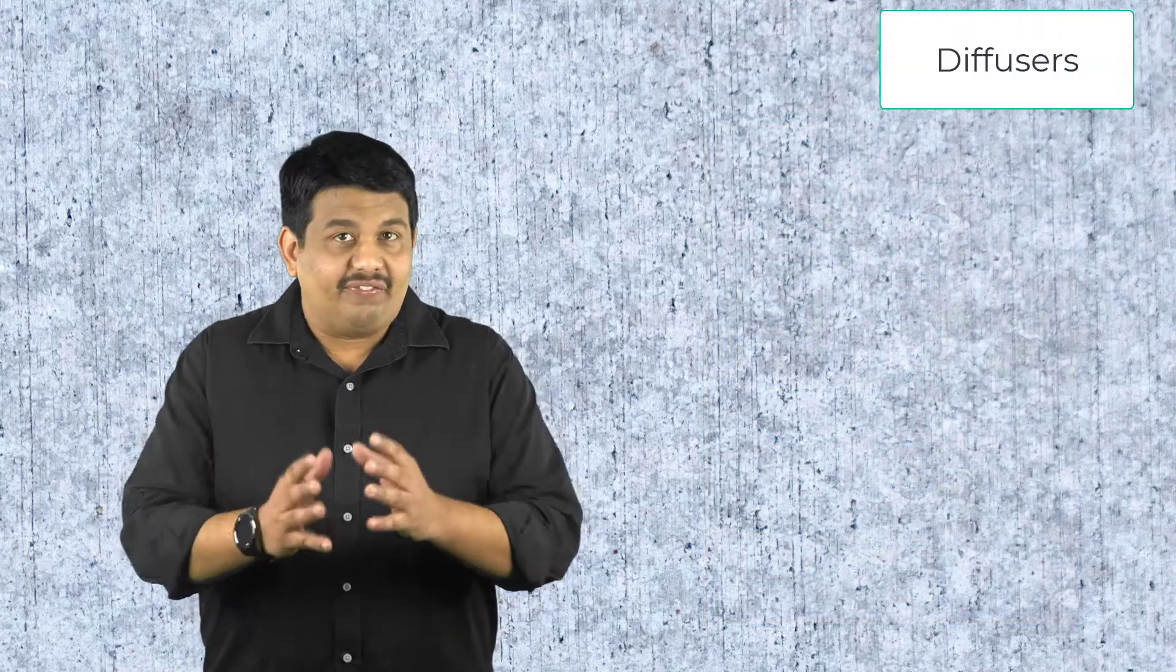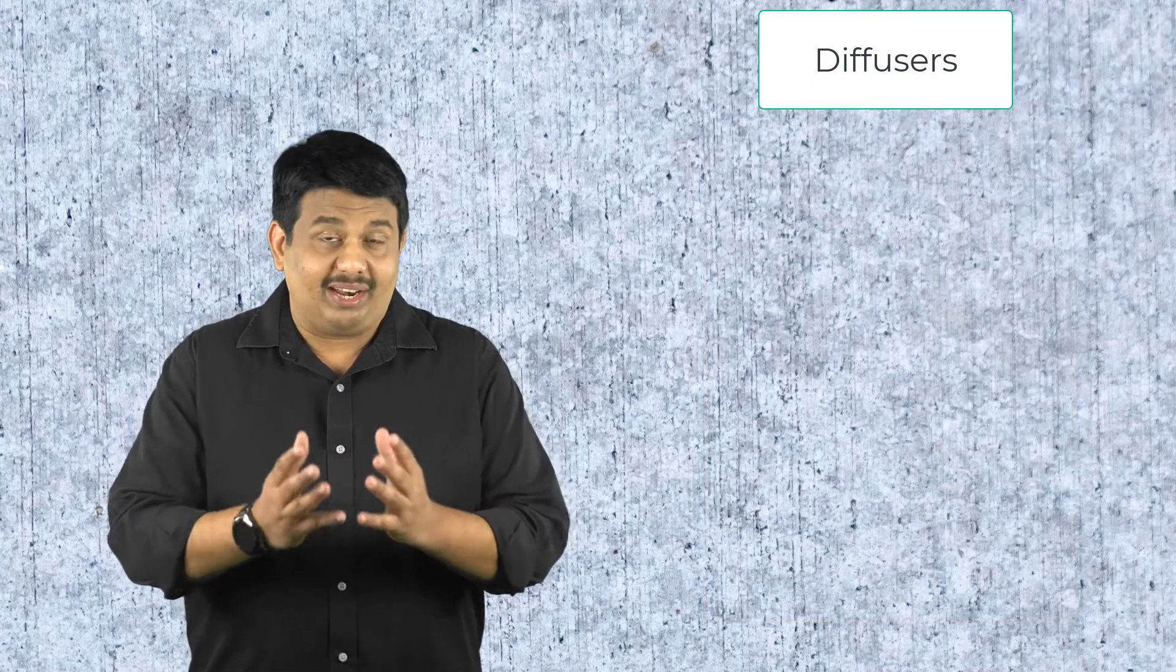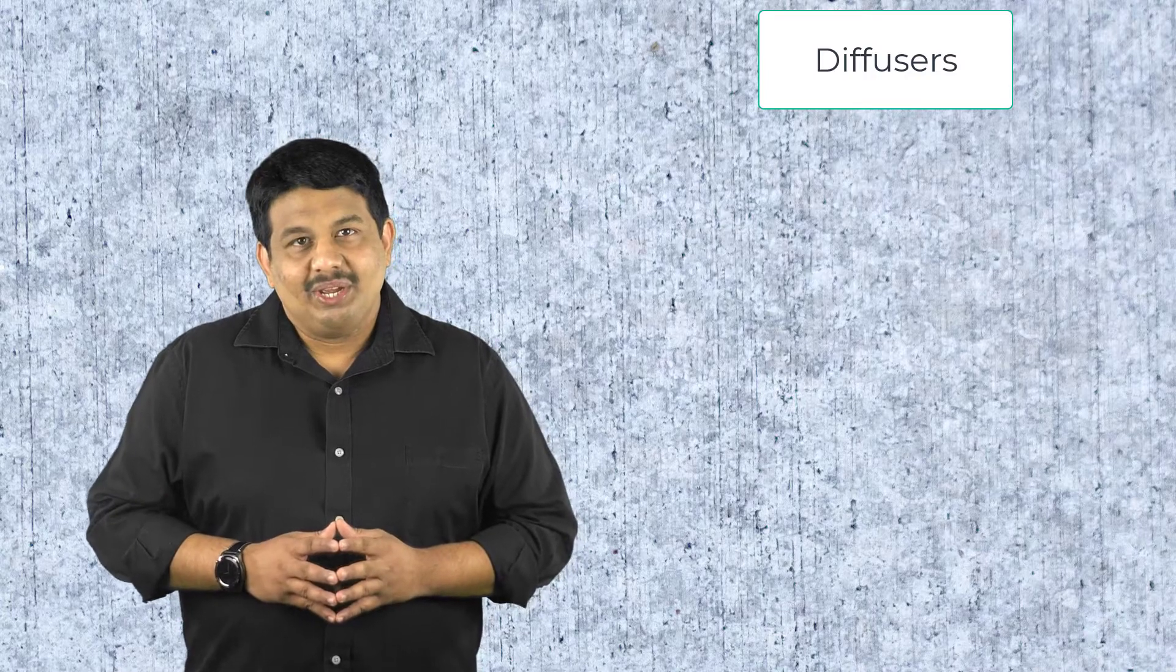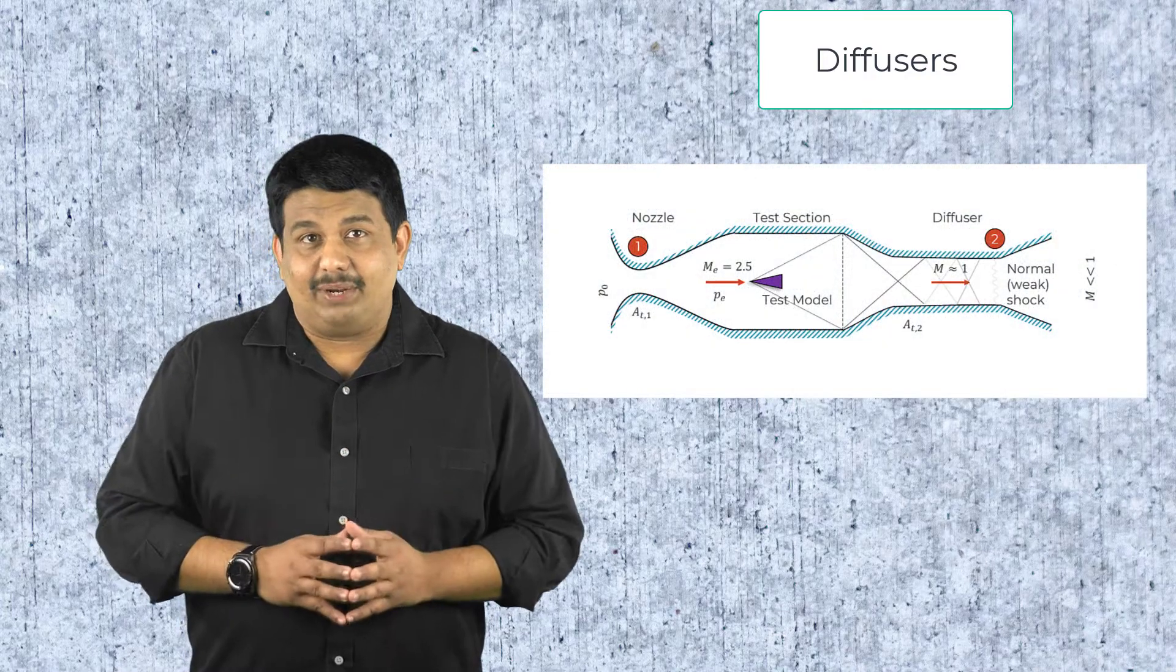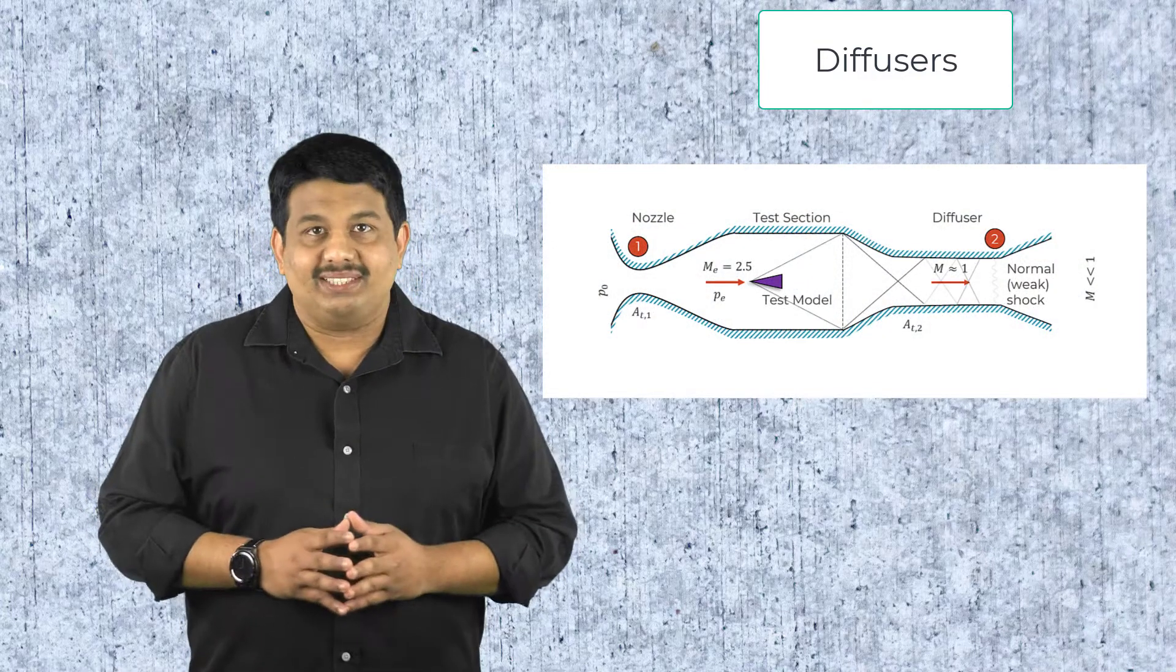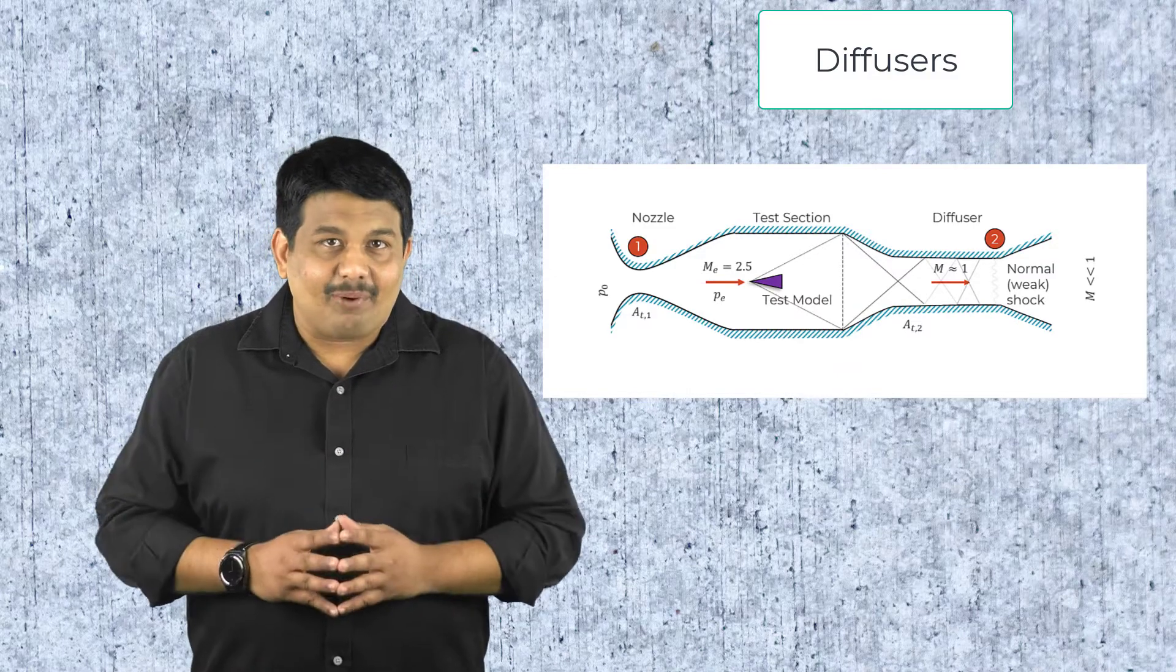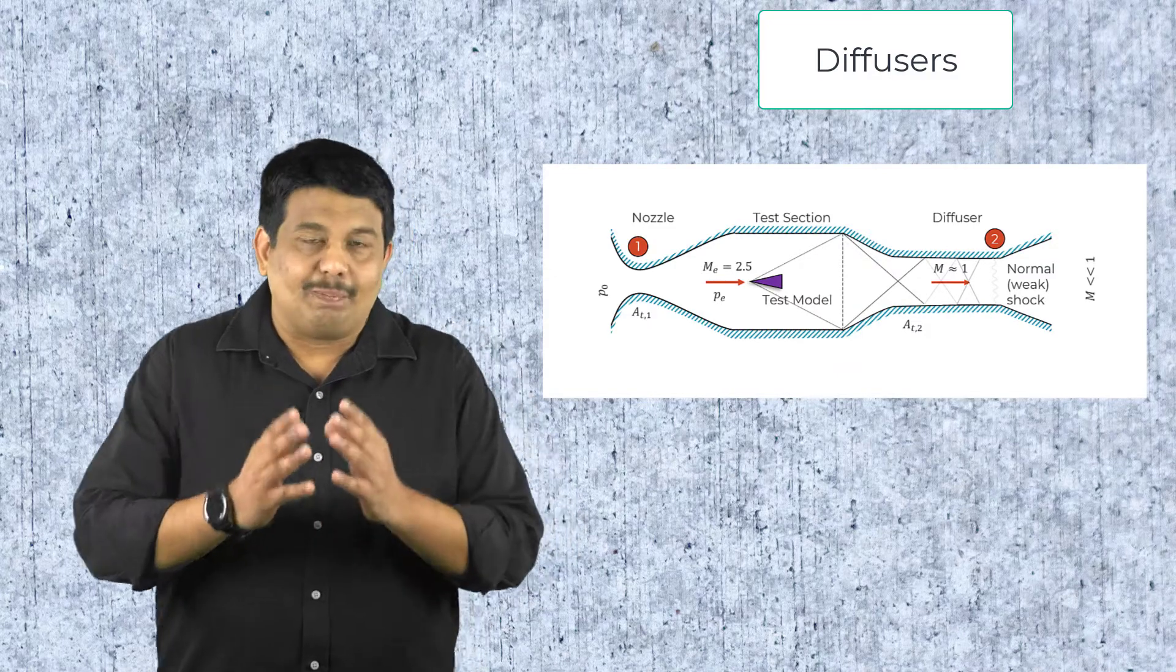We then covered diffusers that are used to decelerate the fluid flow. We discussed the differences between ideal and real diffusers and discussed the starting problem in the context of supersonic wind tunnels.